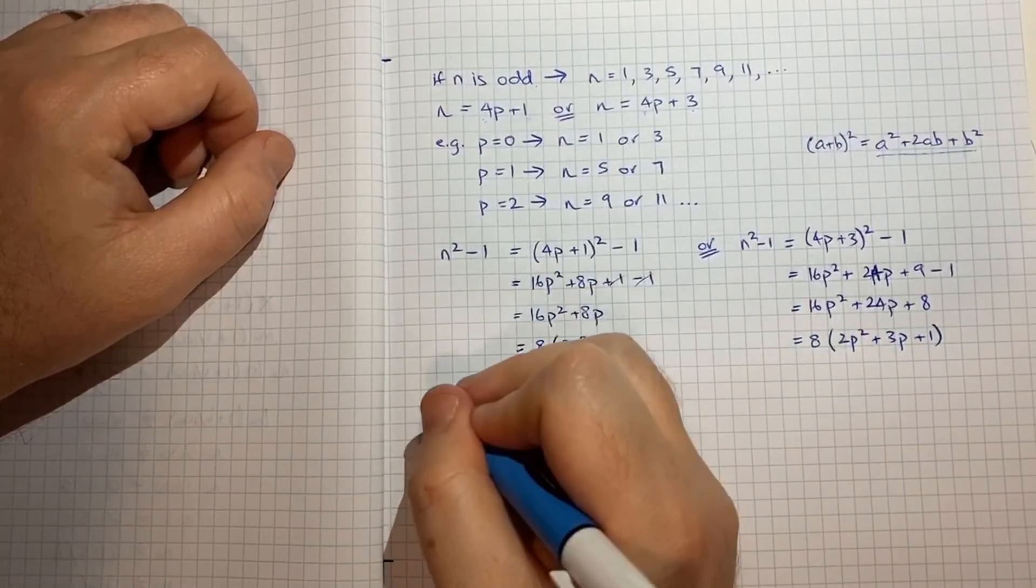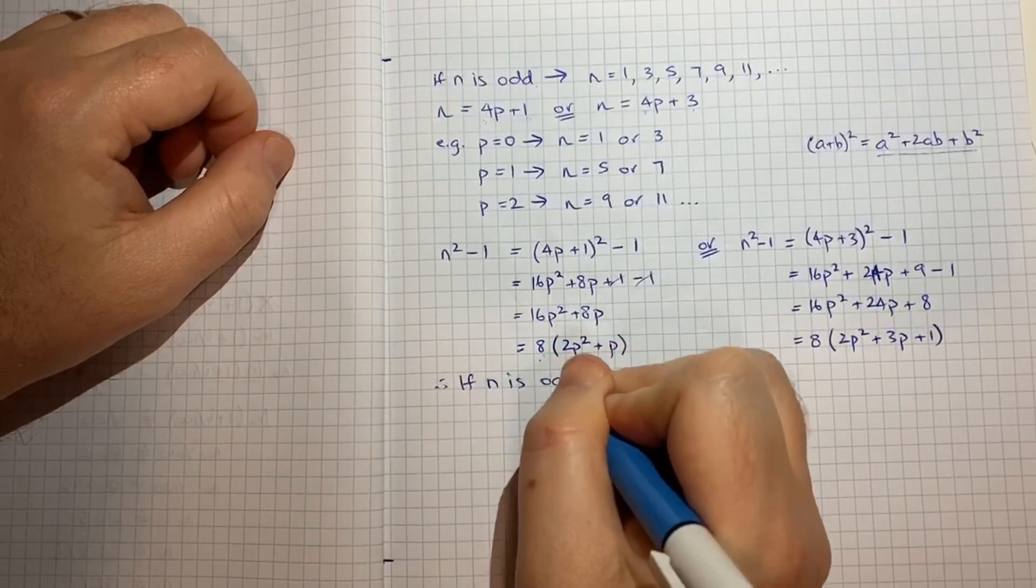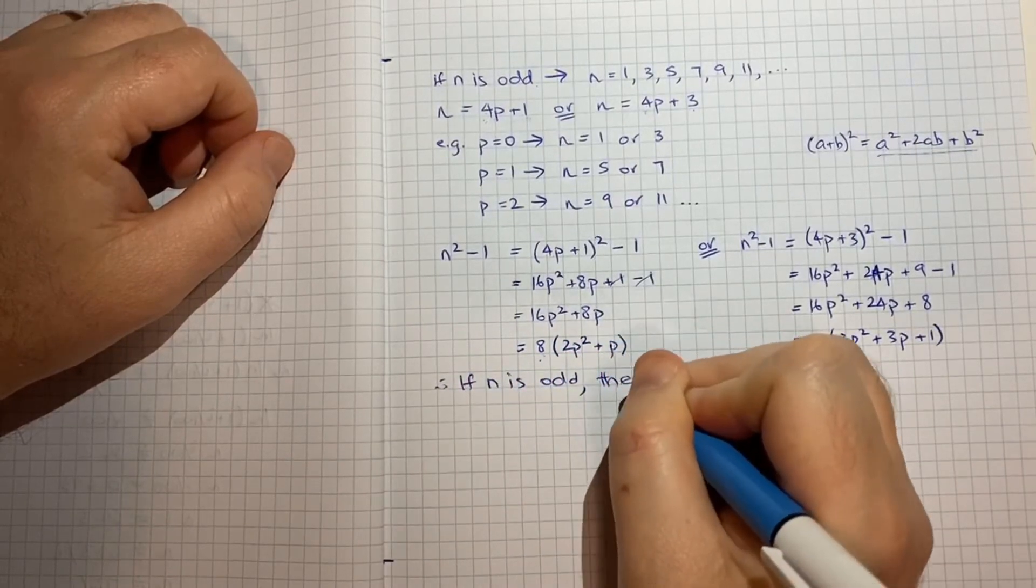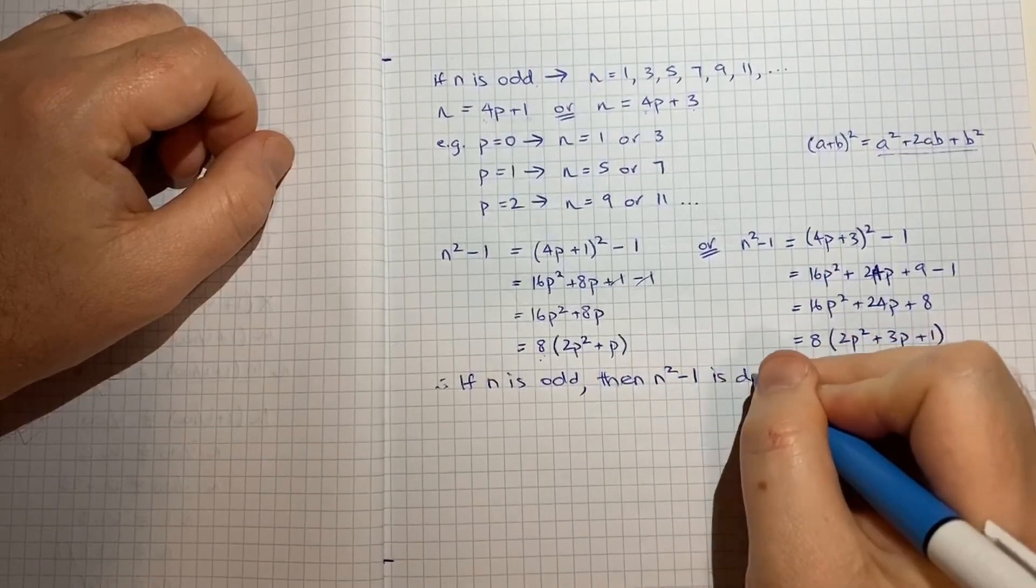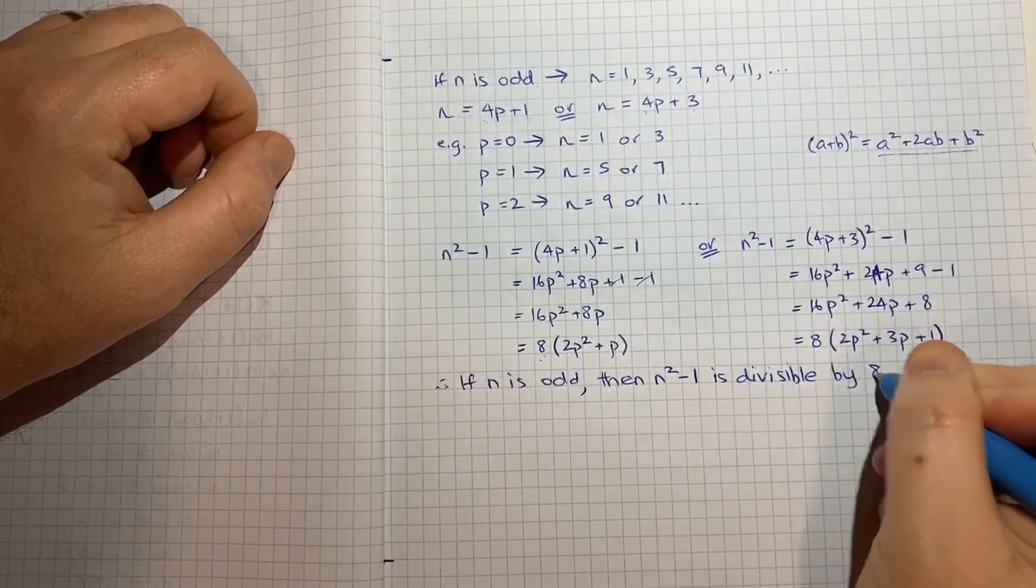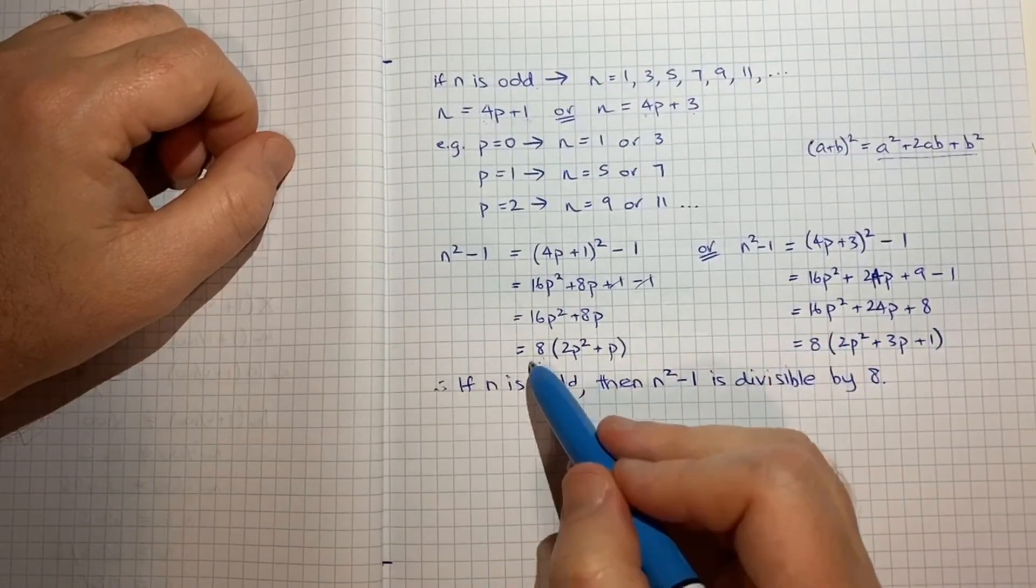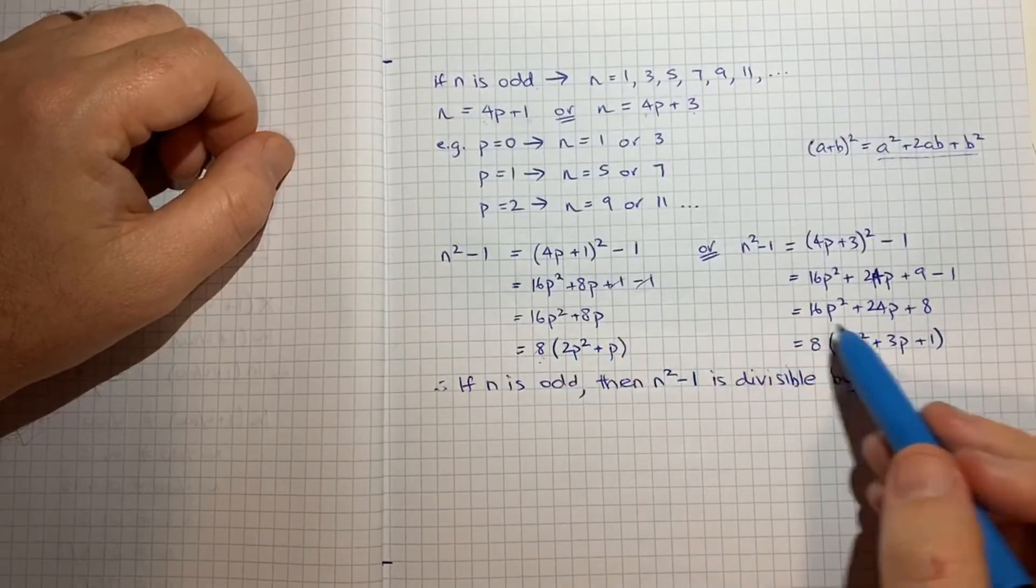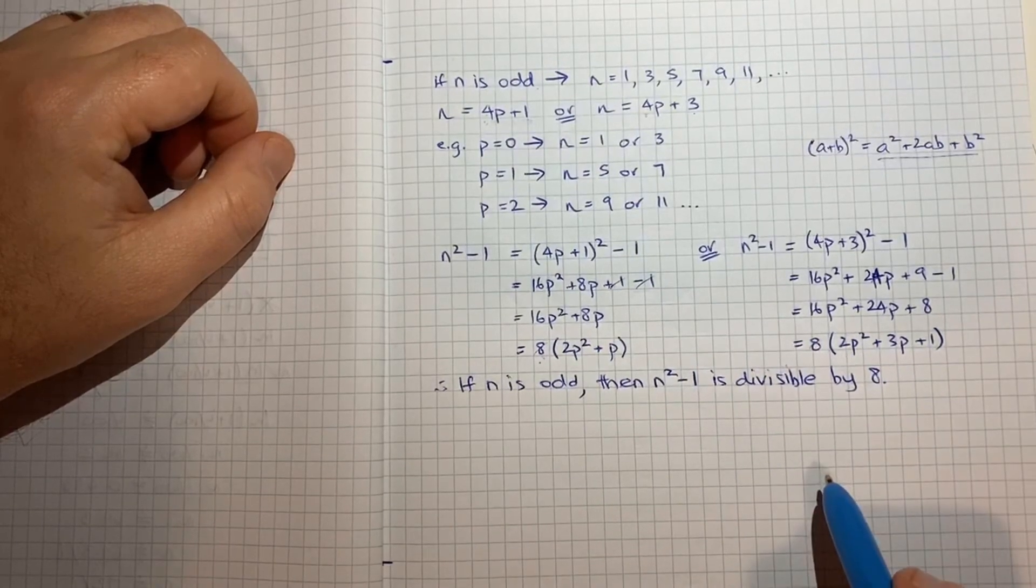And at that point we can say therefore if n is odd then n squared minus 1 is divisible by 8. Because in each case we get something where you can factor out the number 8. So that if you were to divide each of these by 8 you'd end up with still a positive integer.